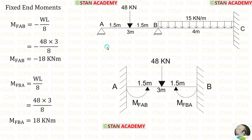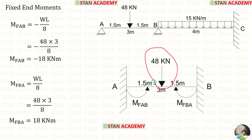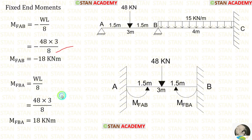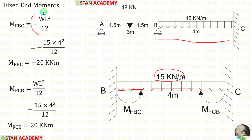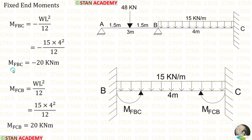Now let us calculate the fixed end moments. First, for span AB with a point load of 48 kN at the center, the formulas are minus WL upon 8 and positive WL upon 8. After applying the values we get the fixed end moments for AB. For span BC with UDL of 15 kN per meter, the formulas are minus WL² upon 12 and positive WL² upon 12, giving us the fixed end moments for BC.